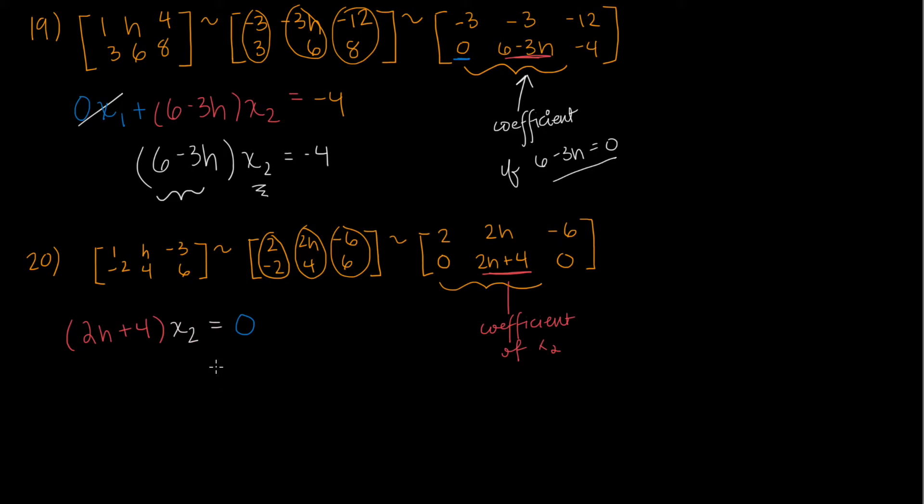then it will be written as two h plus four times x2 equals zero. Now, what does this mean? It means that no matter what we make, no matter what value we have for two h plus four, no matter what it is, will result in this equation always giving a true statement. And I'll explain what that means in a second, a true statement.